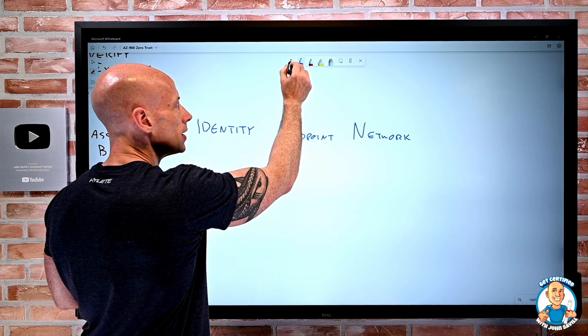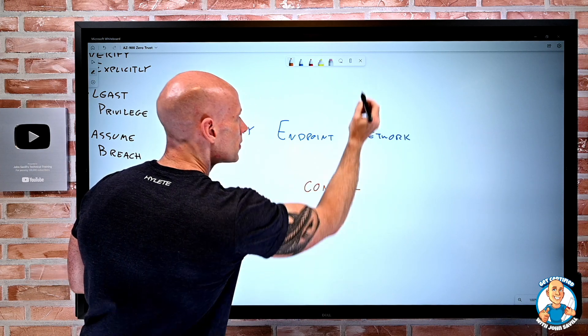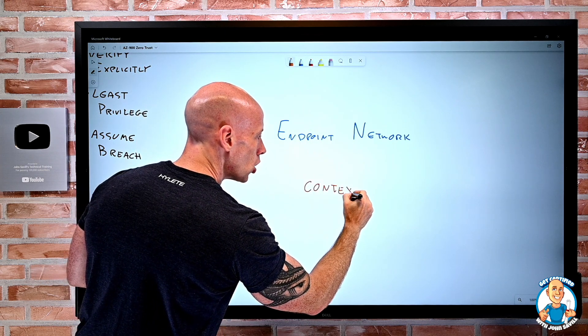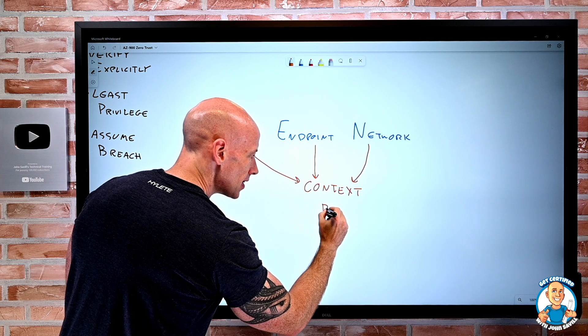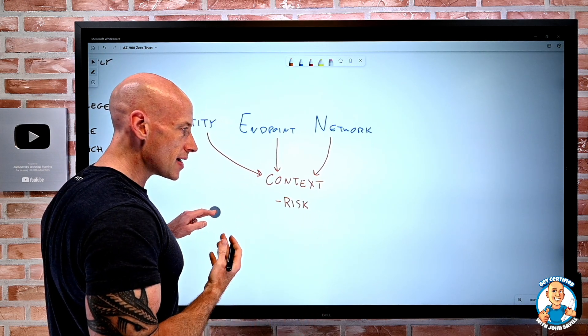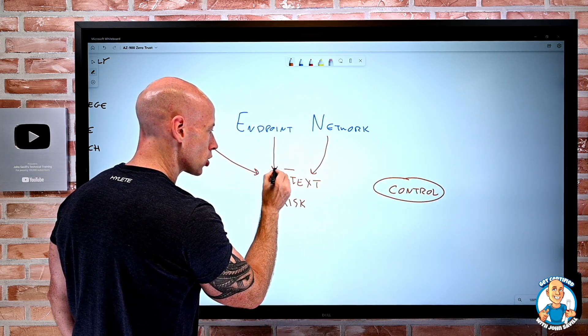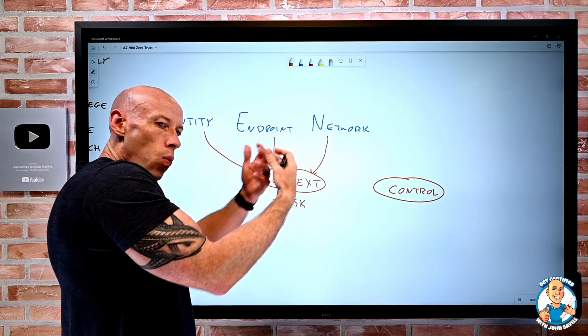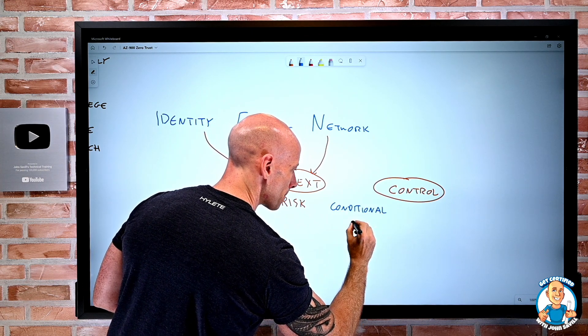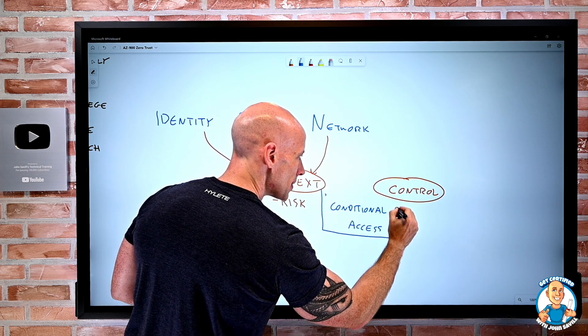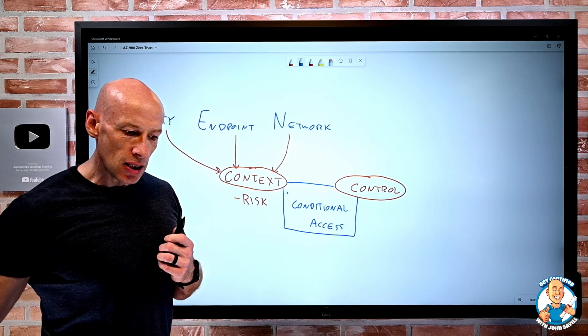Because what I want to then be able to do is I want to think about the context. We're going to look at the context of the request. So the context comes from all of these different things. And from the context, I can help understand the overall risk of this particular request. Because then I want to control what I'm actually going to let you have access to. So we look at the context to control what we're going to let you do. And in terms of solutions, we really think about conditional access. This is obviously a feature of Azure AD Premium. But that is what it's going to control. So we have all these signals coming in. We're going to gather that context to give us control to the bits that we then want to talk to.